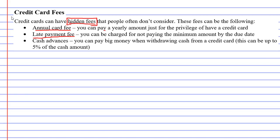Lastly, cash advances. Cash advances can be really costly — they can be anywhere up to five percent of the cash amount. So what does that mean? Well, if you withdraw a thousand dollars, five percent of that is fifty dollars, which means by withdrawing a thousand dollars from your credit card, the bank gets to keep fifty of that. That's quite a lot of money when you think about it.